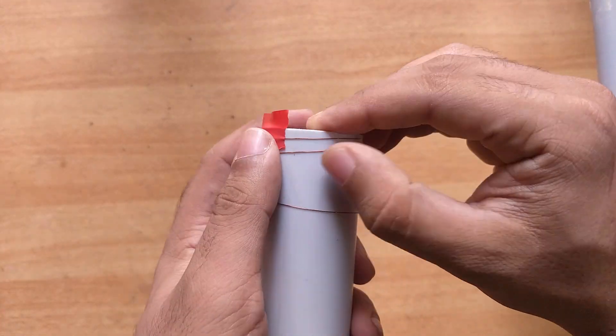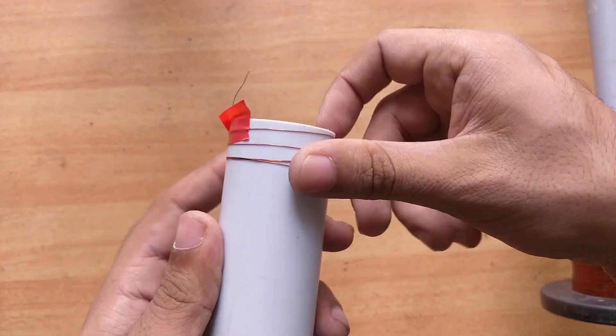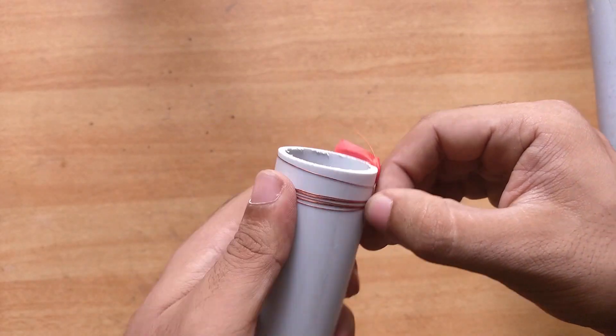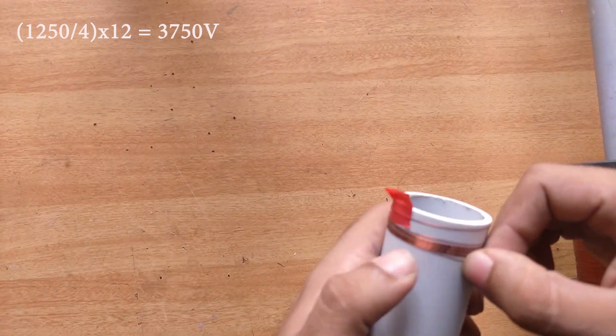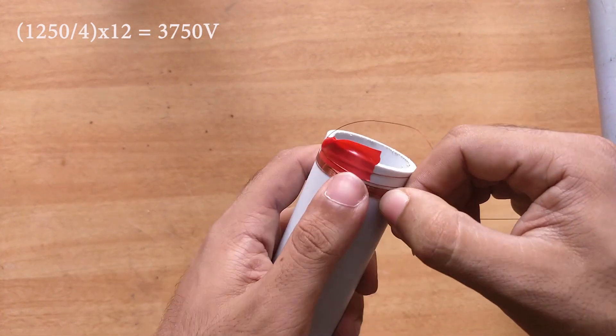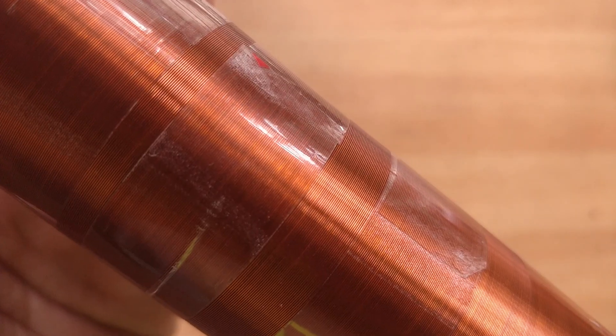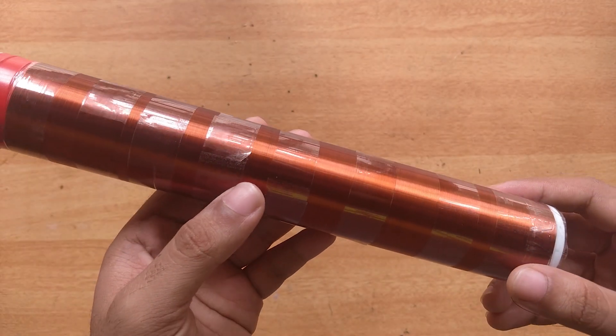So let us start by making the secondary coil. For that let us wind 30 gauge copper wire over a 1.5 inch PVC pipe for 25 centimeter length. If my calculations are correct we will be getting around 1250 turns and that means it can generate a voltage of around 4000 volt at the output. It took me more than 2 hours to wind this completely.